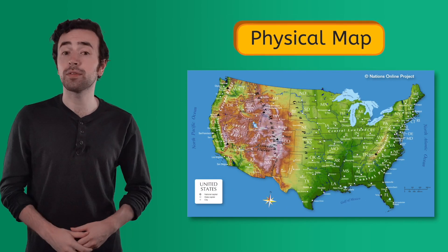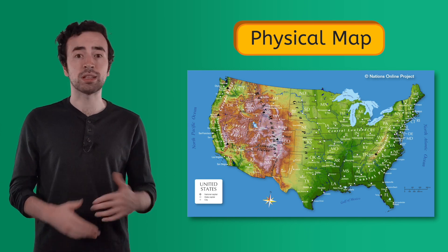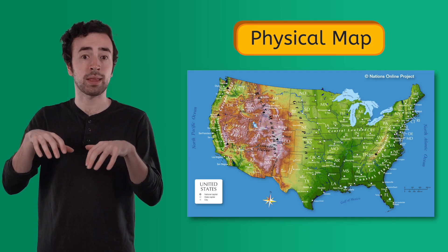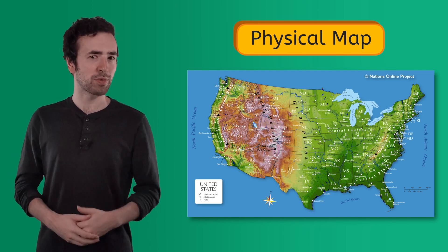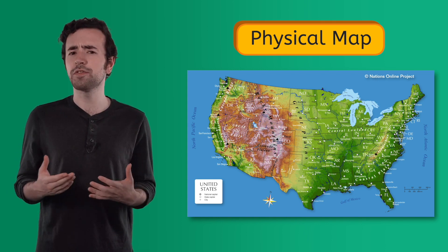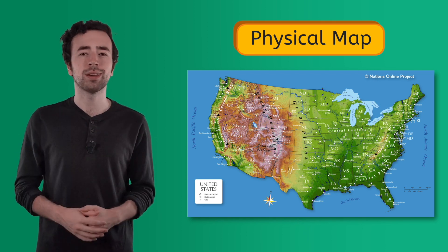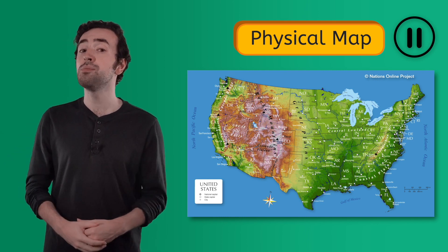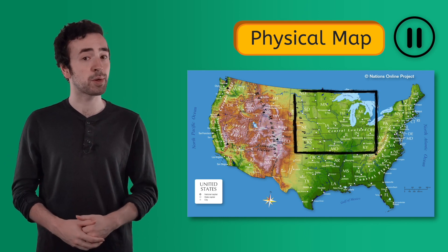Next up, we have physical maps. Physical maps show the natural features of a place, like landforms and bodies of water. Here is a physical map of the United States. The green represents flat land. The red represents elevated land, like mountains. I also see rivers and lakes. If we focus on the Midwest region, what kind of physical features do you see? Pause the video here and complete page 4 of your PDF to learn more about the physical features of the Midwest.